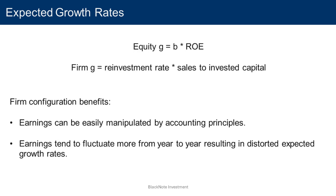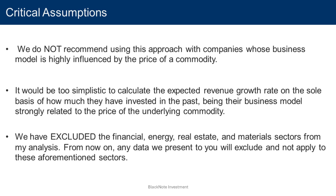The greatest benefit of opting for the firm configuration — especially using revenues over the equity configuration — lies in the fact that earnings can be easily manipulated by accounting principles and tend to fluctuate more from year to year, resulting in distorted expected growth rates. On the other hand, revenues are less prone to accounting miscalculations and tend to follow a smoother pattern in the long term, allowing for more accurate expected growth rates.